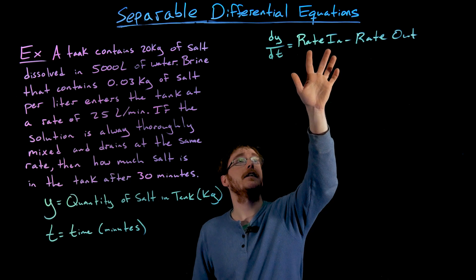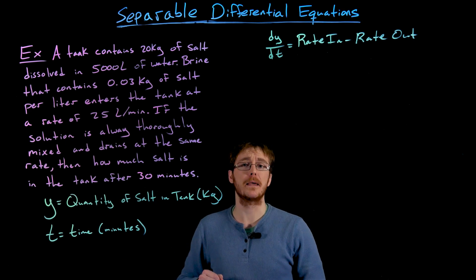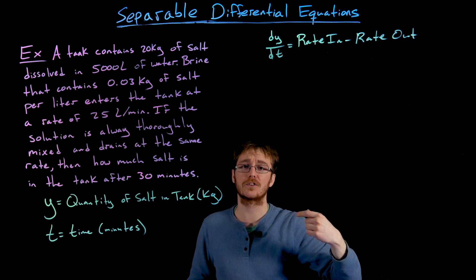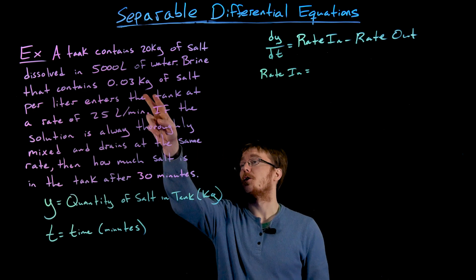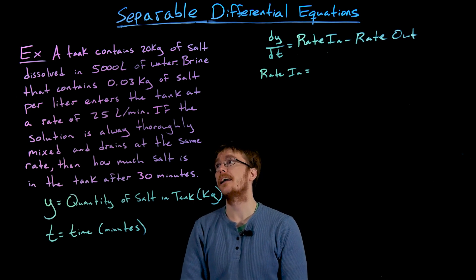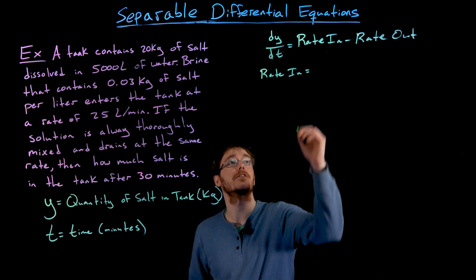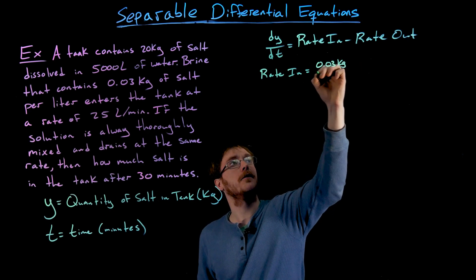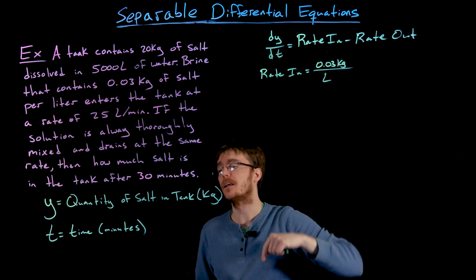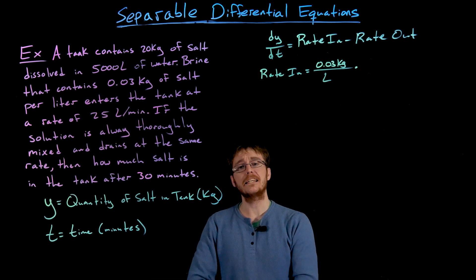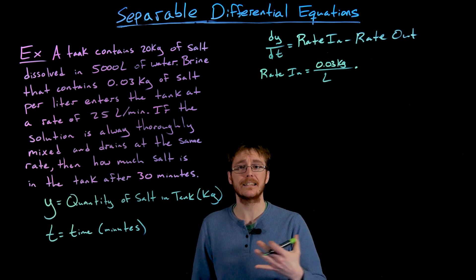The units for the rate in and rate out should match the units of our derivative, which are kilograms of salt per minute. We're told brine enters at 0.03 kilograms of salt per liter. That gives us kilograms per liter, but we need kilograms per minute, so we need to account for the flow rate.